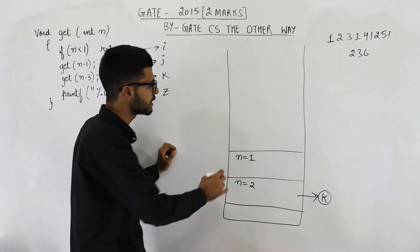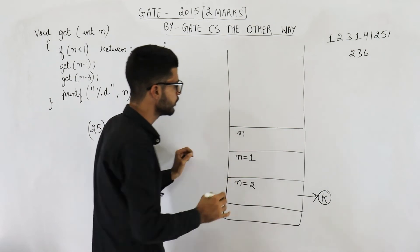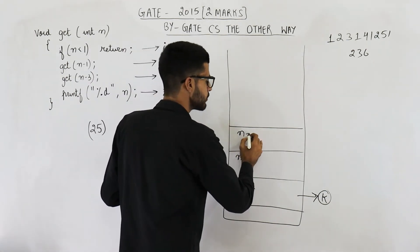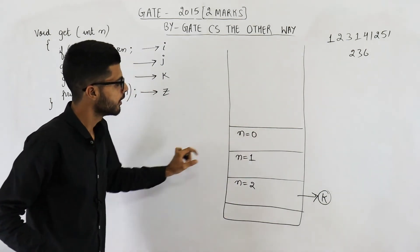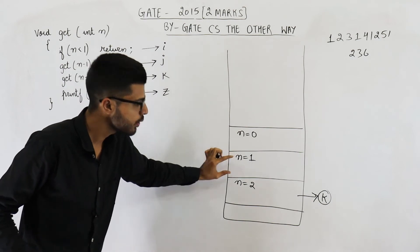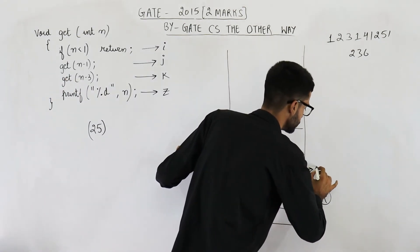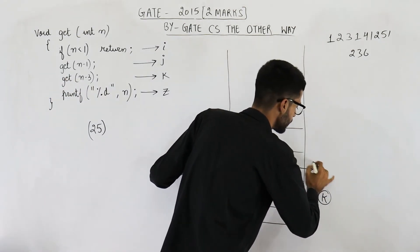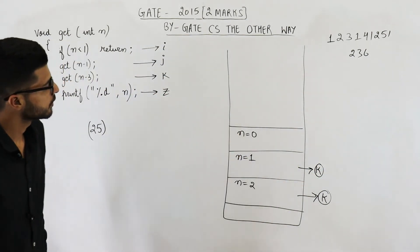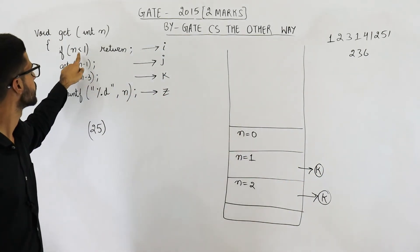So push the activation record for the new function. In this new function, n will get value 1 minus 1 = 0. When this ends, the previous function will also continue from line k.